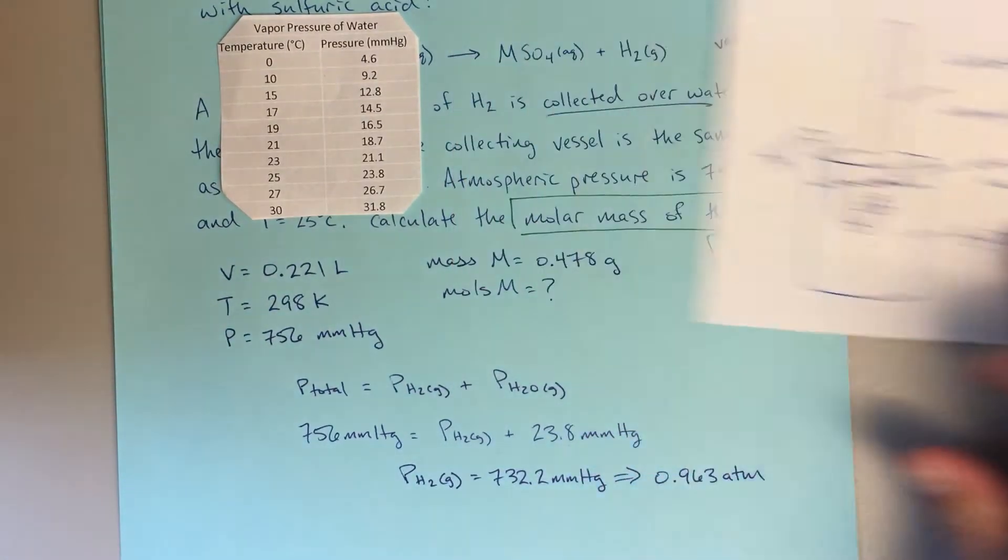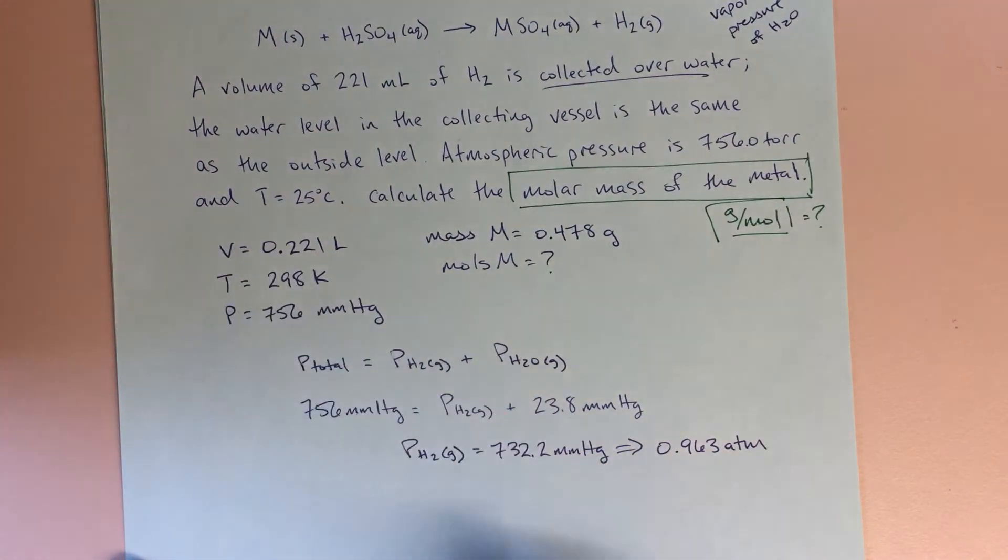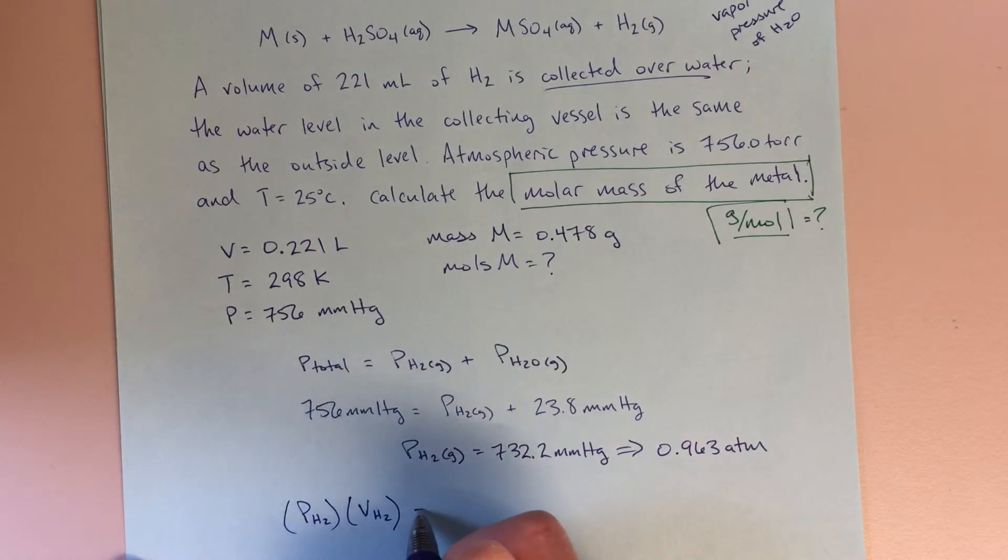Alright, so now, we've got a volume, a temperature, and a pressure for our H2 gas. So I might say, if my pressure of H2 times my volume of H2, that's going to give me my moles of H2, and that's really the key here,